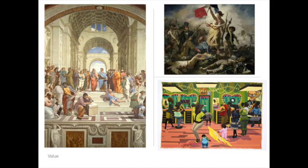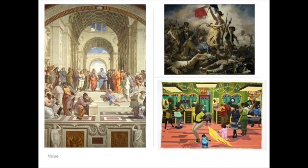Looking at value, Raphael's 'School of Athens' from the early 1500s is extremely unified in its use of value — most values fall within the middle range of the value scale. There aren't really intense shadows or intense highlights; everything is centered in order to create that overall sense of harmony. In contrast, Eugène Delacroix's 'Liberty Leading the People' from 1830 shows quite a bit of variety — highlights and strong shadows are fairly intense on both ends of the value scale, creating emphasis in the piece.